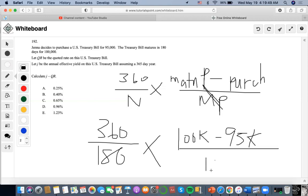So given all this information, let's solve for the quoted rate. It's going to be 100,000 minus 95,000 divided by 100,000, times 360 divided by 180, and it's going to be 0.1. So 0.1 is going to be the quoted rate.